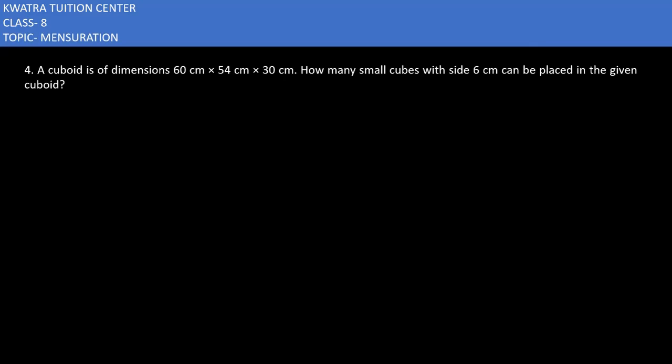Let's start with question number 4. It says cuboid is of dimension 60, 54, 30. It means length is given, breadth is given, height is given.